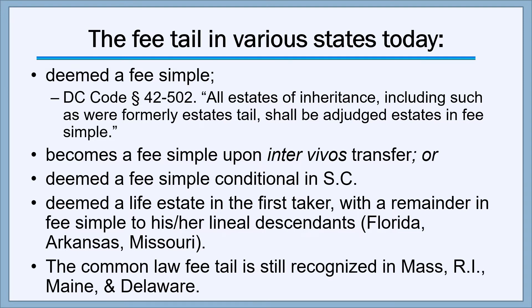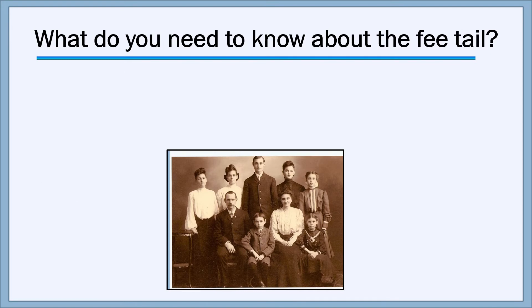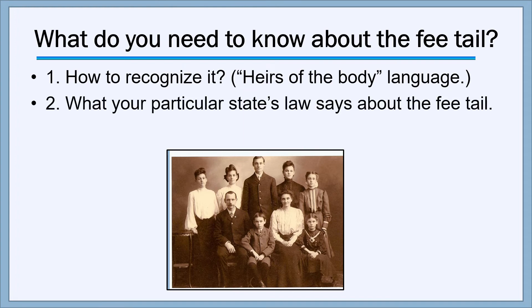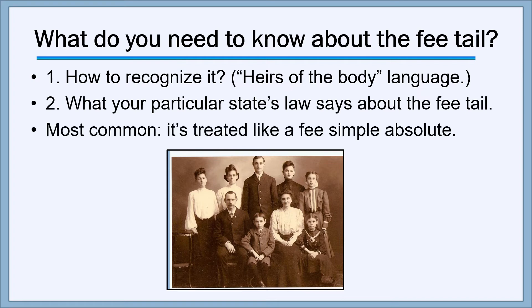The common law fee tail estate is still recognized in a few states, including Massachusetts, Rhode Island, Maine, and Delaware. So what do you need to know about the fee tail estate today? In reality, not very much. First, you need to be able to recognize it by looking at that 'heirs of the body' language. Second, you need to know what your particular state's law says about the fee tail. As I indicated, the majority or most common view is that it's treated simply like a fee simple absolute.